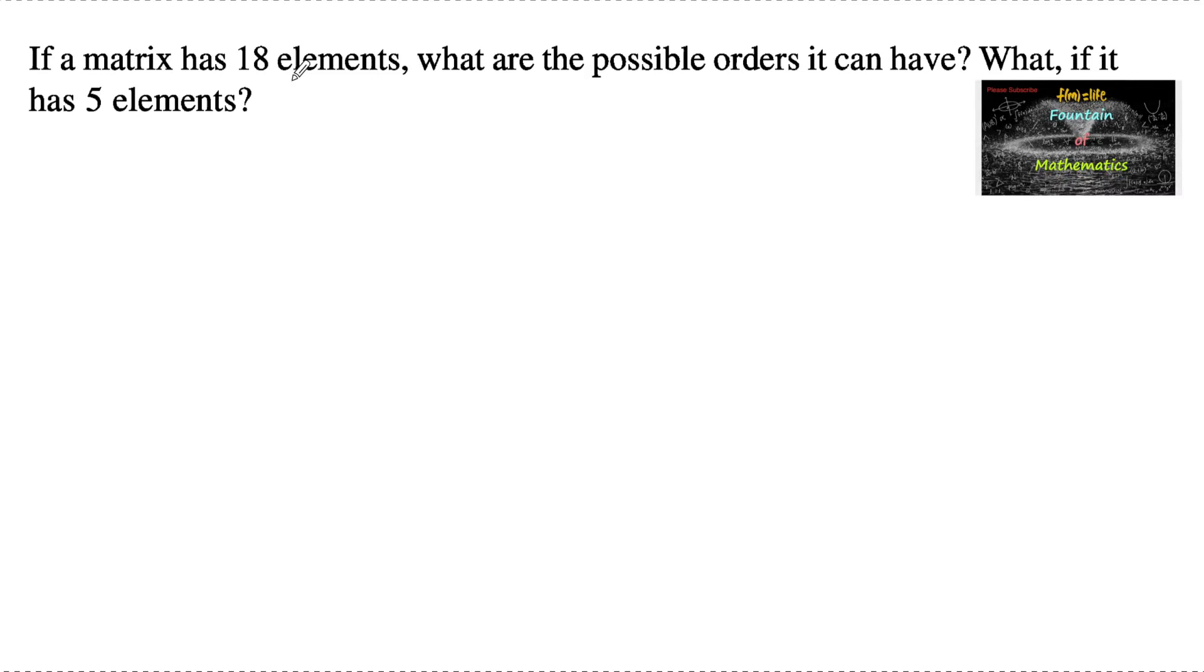If a matrix has 18 elements, what are the possible orders it can have? What if it has 5 elements? Let the matrix be A whose order is m rows and n columns, that is m by n.